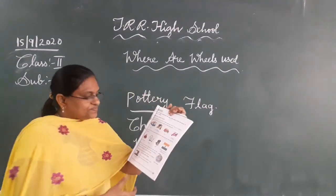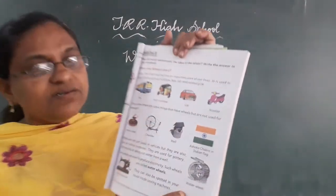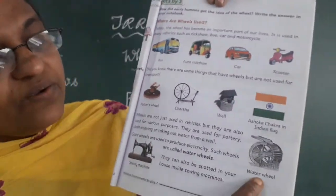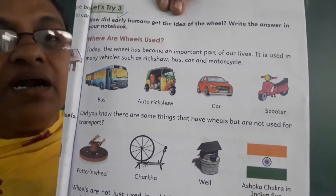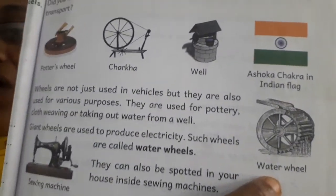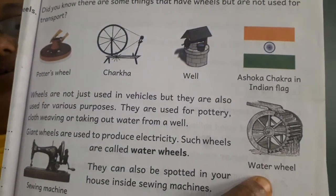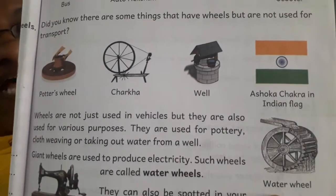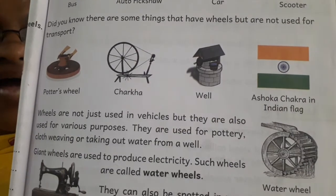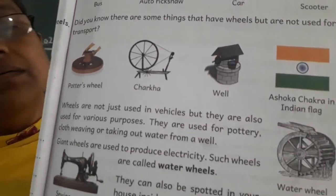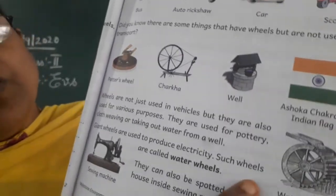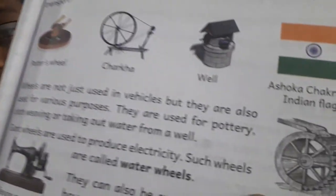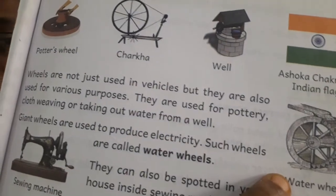Not only in the flag, we also use the wheel in water wheels. This is the machine used to take out water from dams. When you go to fourth or fifth class, you will learn more about dams. Dams are built on big rivers, like large ponds. Water is taken from the dams using these types of machines.